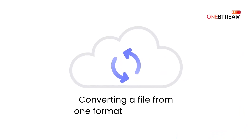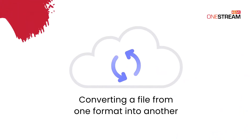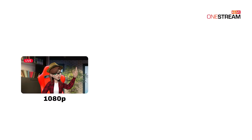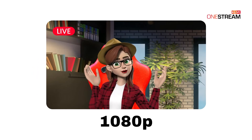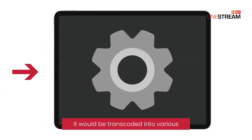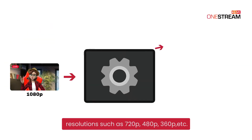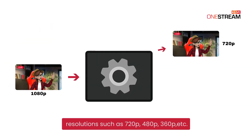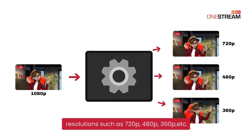Video transcoding is the process of converting a file from one format into another. For example, if you have a 1080p video, it would be transcoded into various resolutions such as 720p, 480p, 360p, etc.